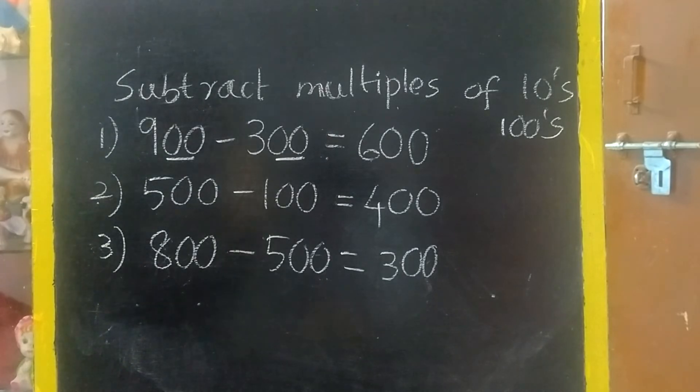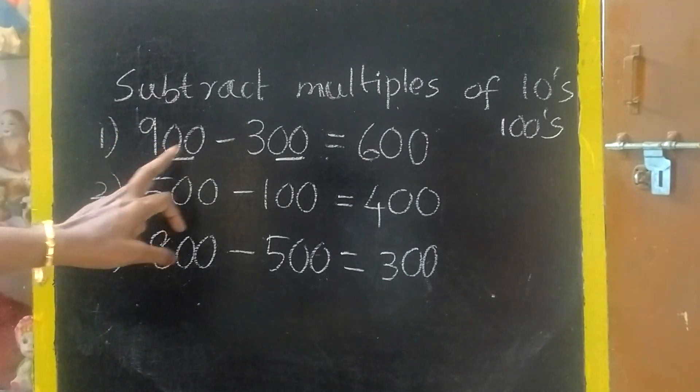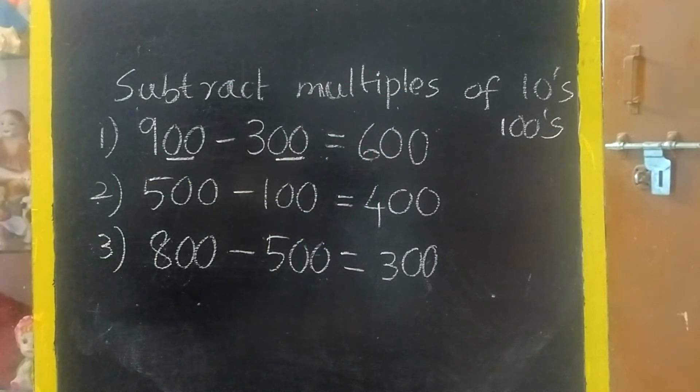So, like this you have to do. But, check whether it is multiples of both should be hundreds. Then only we can use this method. Both should be tens. Then only we can use that method.